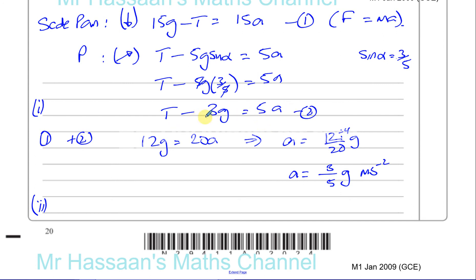So we can say T equals 5a plus 3g. So you're going to have 5 times 3 fifths g plus 3g. The 5 and the 5 cancel out, so you're left with 6g Newtons.